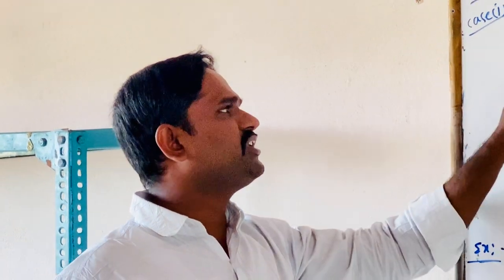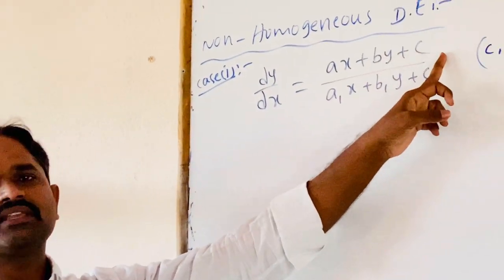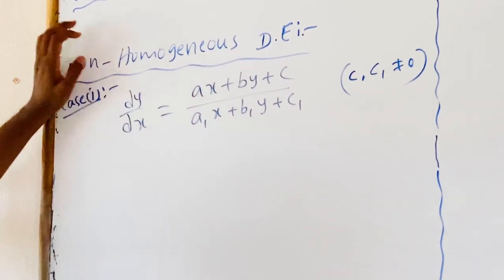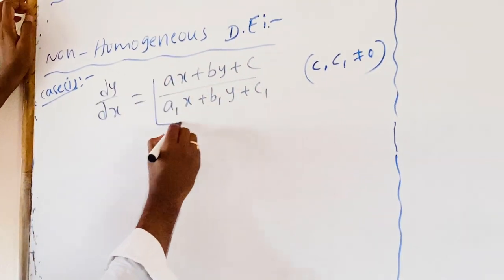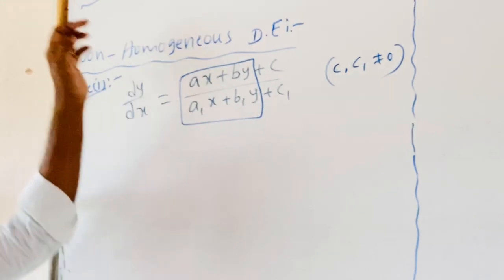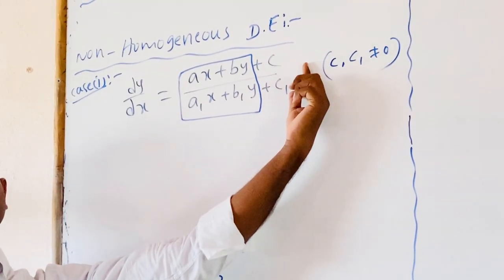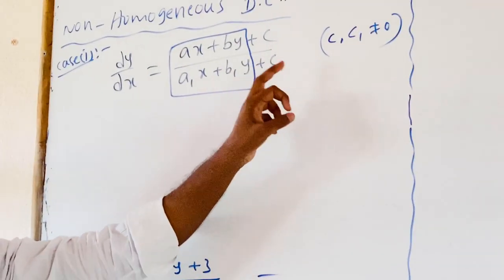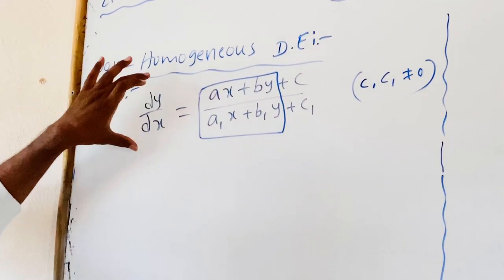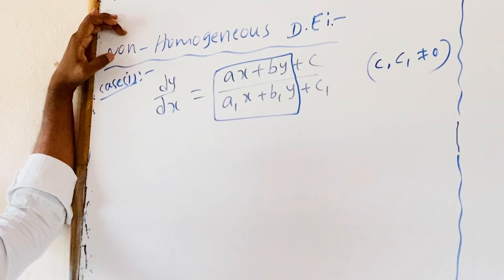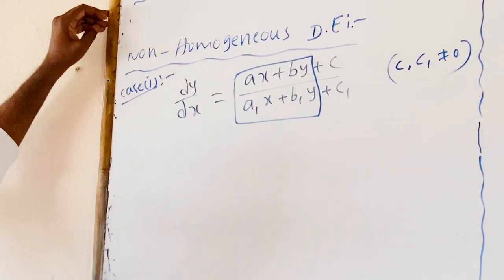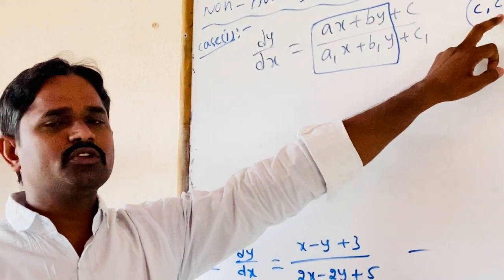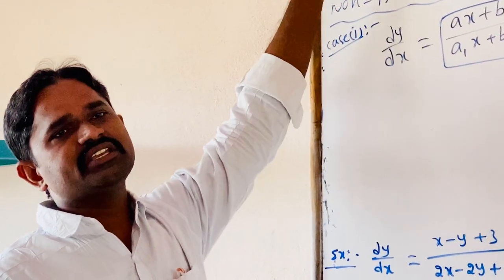Let us take an equation dy/dx = (ax + by + c) / (a1x + b1y + c1), which is in the general form. In a homogeneous differential equation, the numerator and denominator have no constant terms. But here we have x and y terms plus c in both numerator and denominator, making it a non-homogeneous differential equation — provided c and c1 are not equal to zero. If c and c1 are both zero, it becomes a homogeneous differential equation.